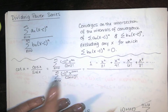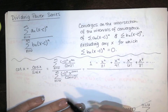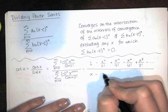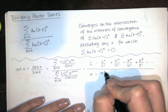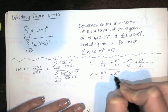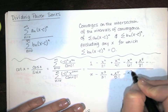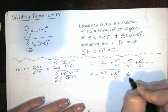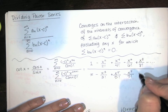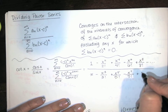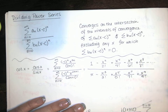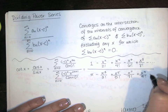The sine series is similar but has odd terms instead of even terms. It ends up being x minus x³ over 3! plus x⁵ over 5! minus x⁷ over 7!. These patterns are really beautiful and satisfying.